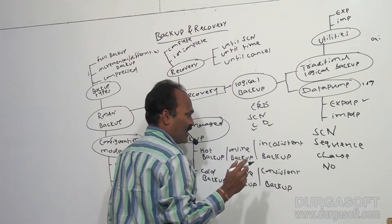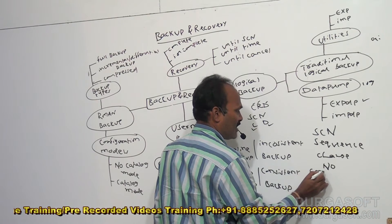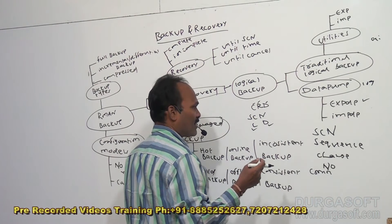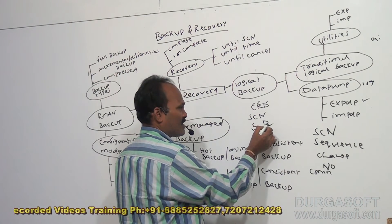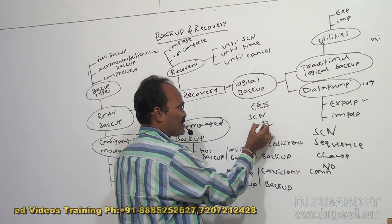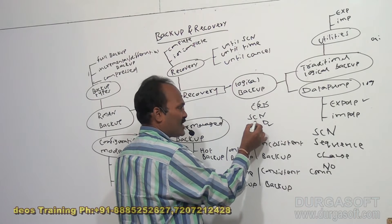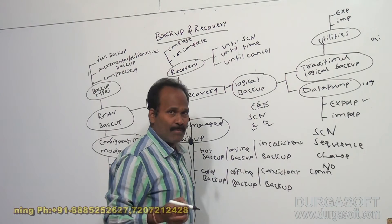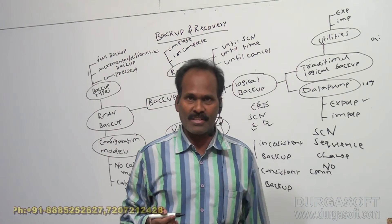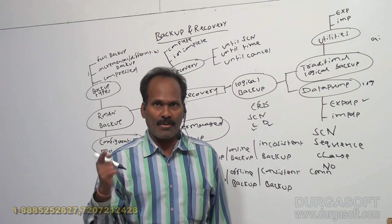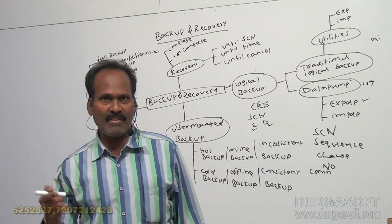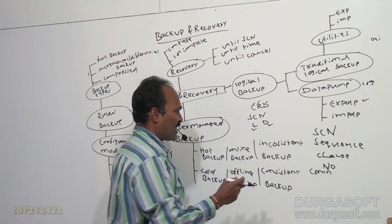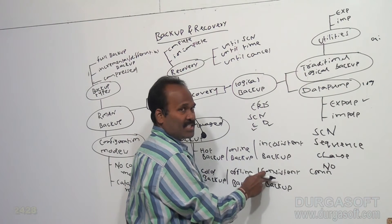Every time a commit command is executed, Oracle updates and advances the SCN number forward into control files and data files. At that time, Oracle advances the SCN number into both control files and data files, meaning both files will have the same SCN numbers. When data files and control files have the same SCN numbers, if you take a backup at that moment, it is called a consistent backup.